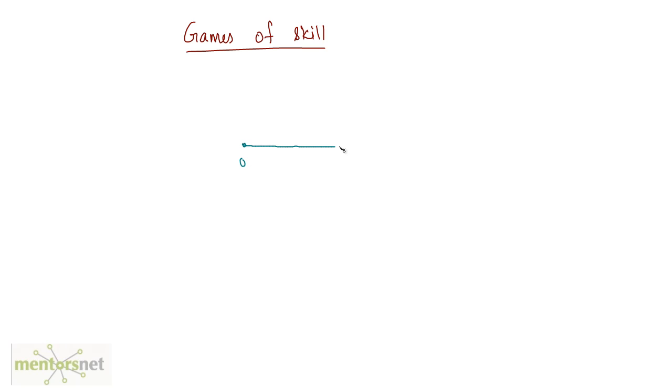Let us talk about games of skill in this video. The problems asked on games of skill are similar to the problems asked on races. What is a game of skill? If we consider a game of 100 points, the first one to reach 100 points is the winner — similar to a race of 100 kilometers where the first one to cross 100 kilometers wins.